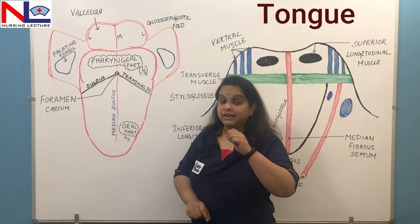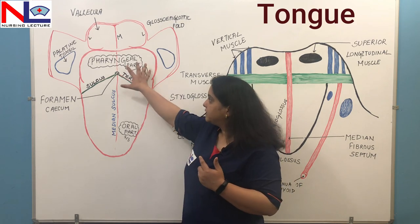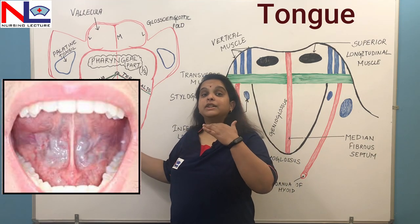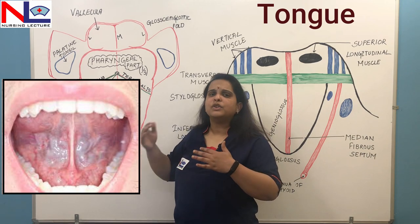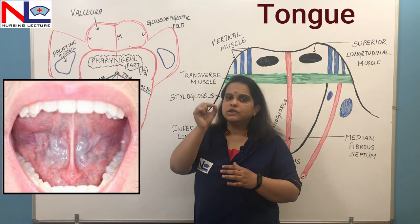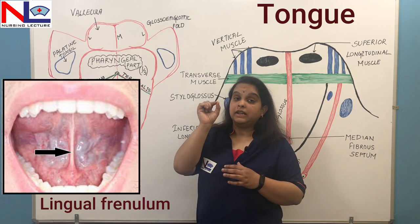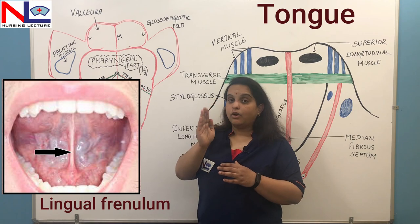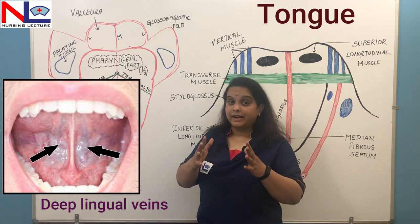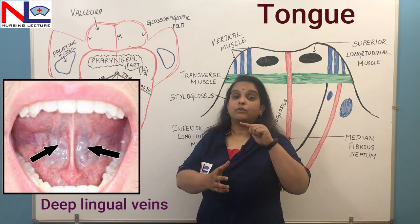When you pull your tongue and see in the mirror, the part which you can see is called the dorsum or the upper surface. Inferior to this dorsum is the inferior surface, which directly comes in contact with the floor of the mouth. On the inferior surface, there is one mucosal fold that attaches the tongue to the floor of the mouth, called the lingual frenulum. On either side of this lingual frenulum, there are deep lingual veins which are prominent and elevated, and you can see these when you turn your tongue backward.